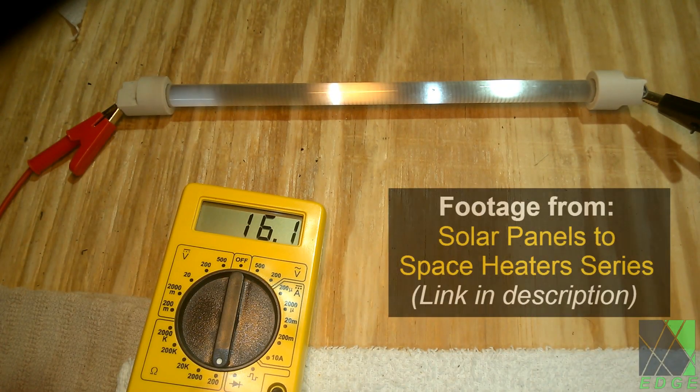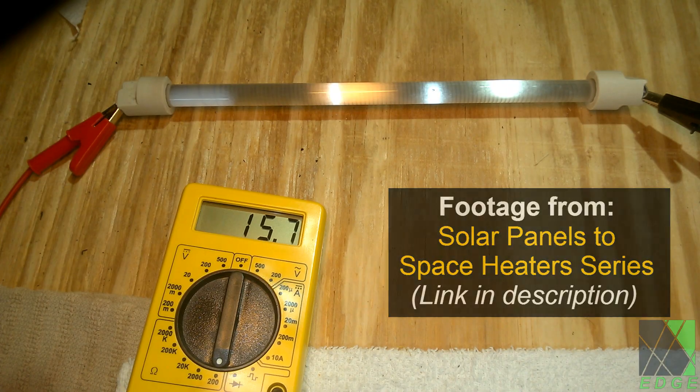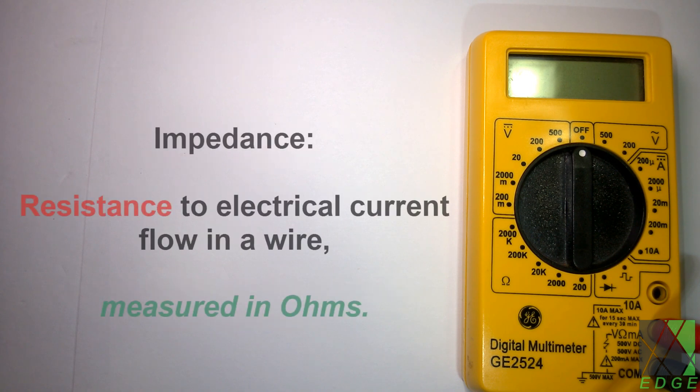The number one problem faced when driving a load from a solar panel directly is impedance matching. Let's use a simple resistive heating element as an example. Just to be clear, impedance means resistance to current flow. Impedance, or resistance, is measured in ohms.